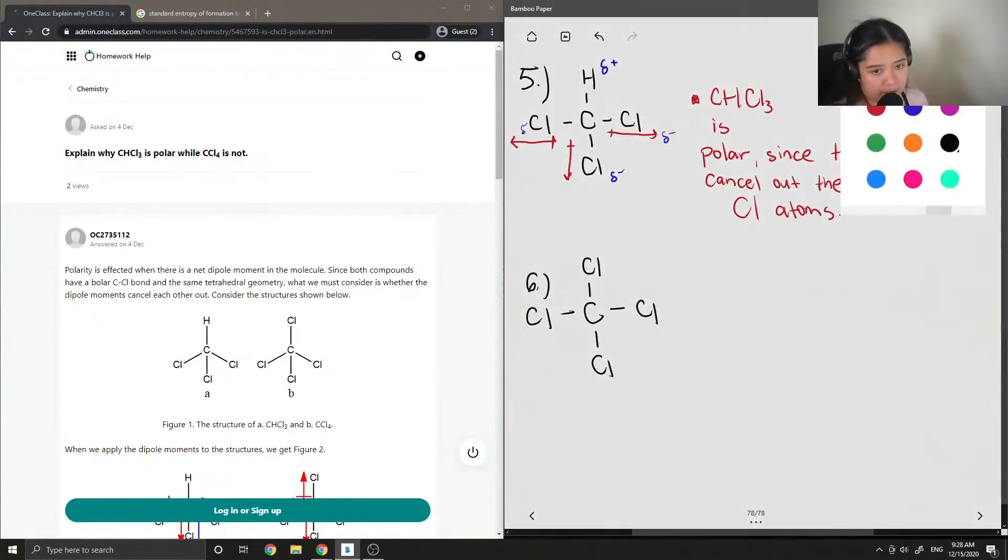Again, chlorine is more electronegative than the carbon, so we'll see all of the dipole moments that are created by these electronegative chlorines.